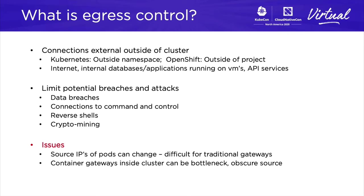The reason egress control is worth at least 15 minutes of your time is because this is how someone actually makes off with your data. We too often focus on preventing attacks or vulnerabilities from getting into our environments, but the egress connections are literally the getaway car. In order to get the value of an infiltration, the attacker may need to use a reverse shell or connect to a command and control server, or in the case of crypto mining, you need an egress to get your Bitcoin credit. With Kubernetes, egress control can be a challenge because the source IPs of the pods change dynamically when they're spun up or moved node to node.